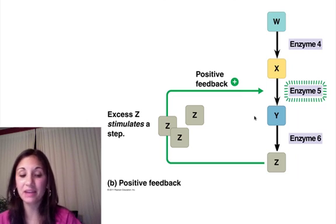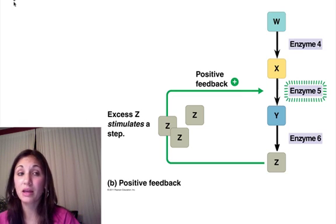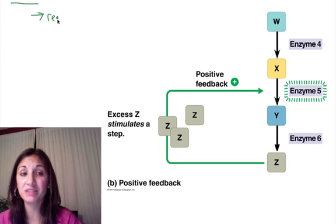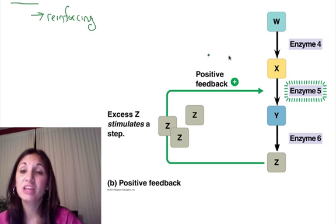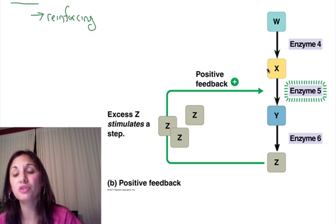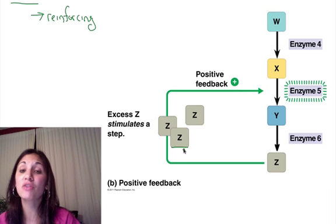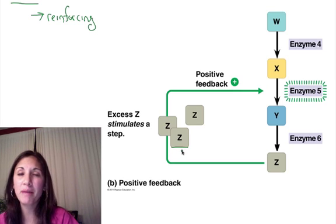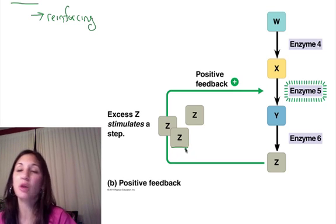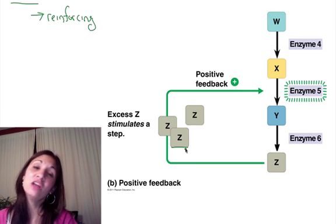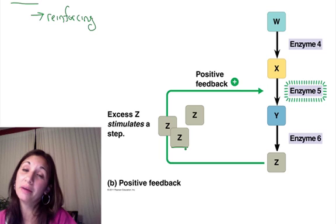The opposite of negative feedback is positive feedback, also thought of as reinforcing feedback — it keeps the chemical reaction going. In this case, reactants W produce X, X produces Y, Y produces Z. Z could be a cofactor for an enzyme or a coenzyme, and it's going to serve to enhance the reaction and keep it going. We'll come back to these a lot more when we start talking about hormones in the body — this is just to introduce you to concepts you'll see in more depth later in the course.